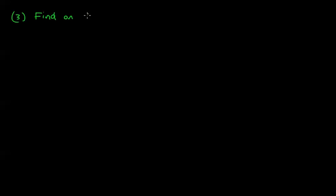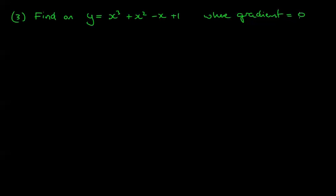Example 3: find on the graph of y = x³ + x² − x + 1 where the gradient is equal to 0. Think about what a gradient of 0 means — that's going to be a flat tangent line. So first, let's differentiate.